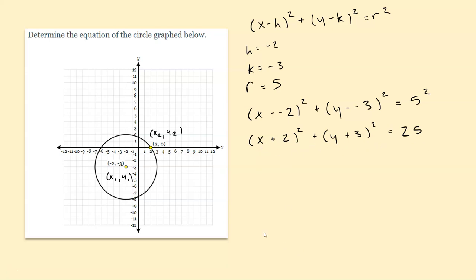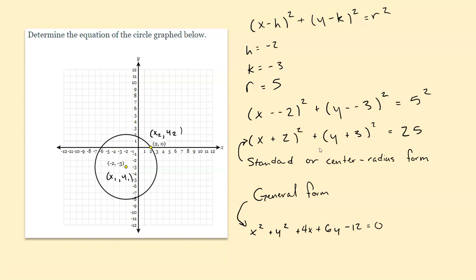If you expanded all of this with separate terms and fully expanded exponents, that's called general form for an equation of a circle. This is standard or center-radius form, and if you expanded it and then subtracted 25 to the other side to set it equal to 0, that is general form. You should put your answers into Delta Math in standard form — that's the more useful form for our purposes. Worth noting the difference.